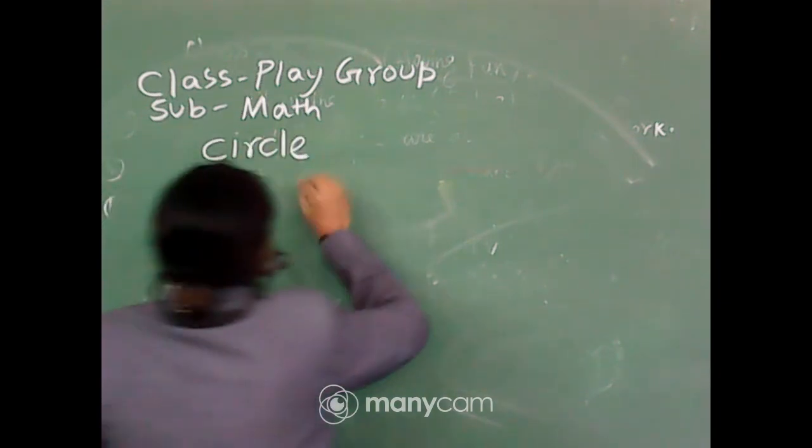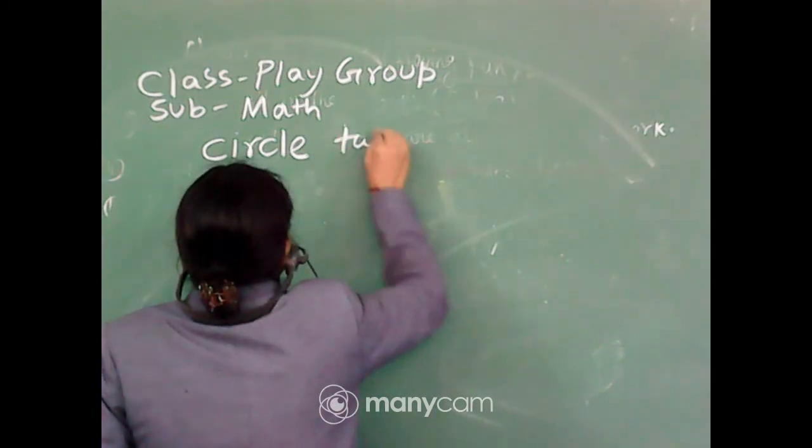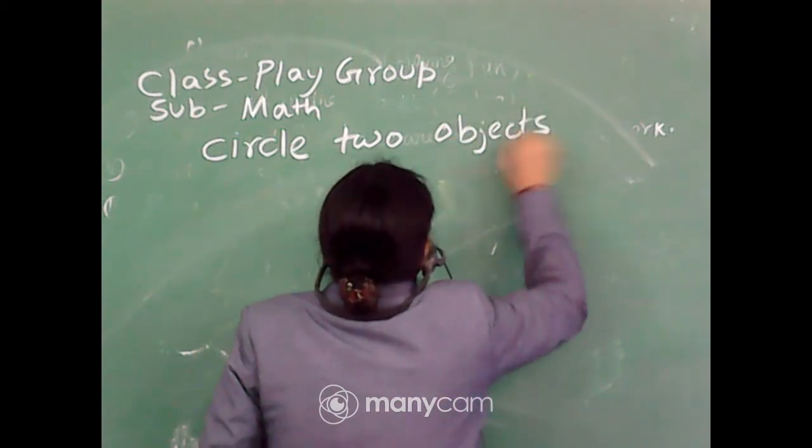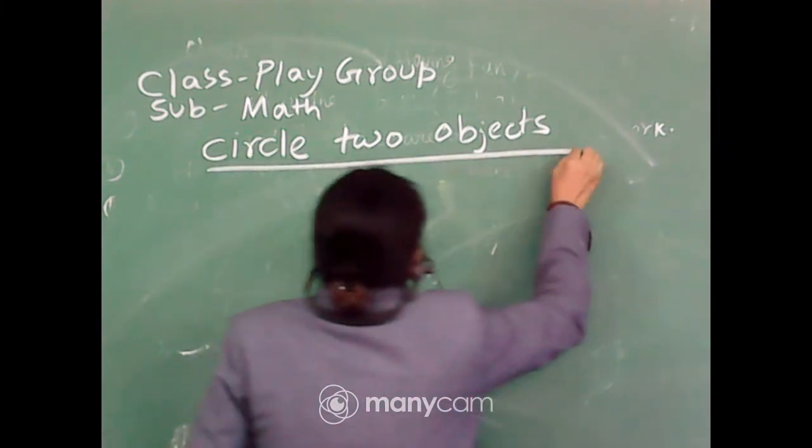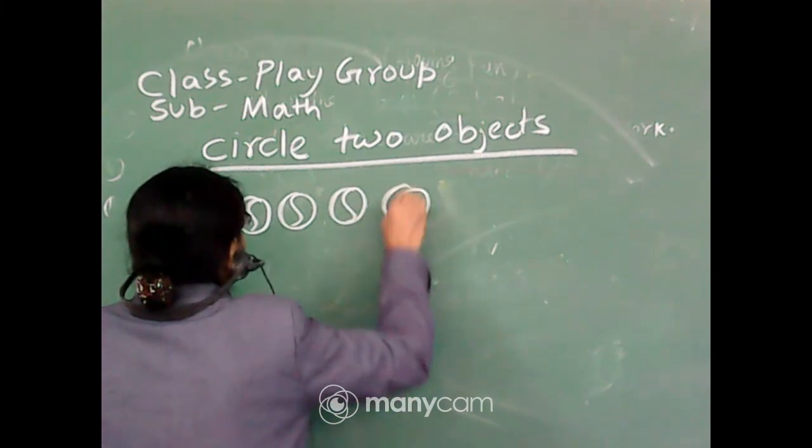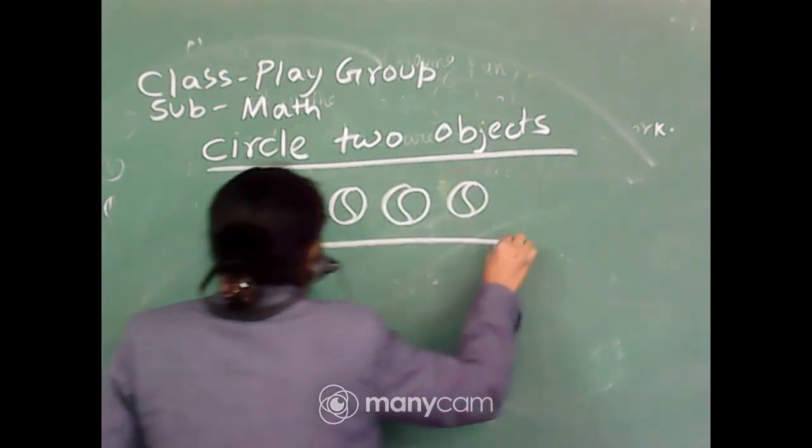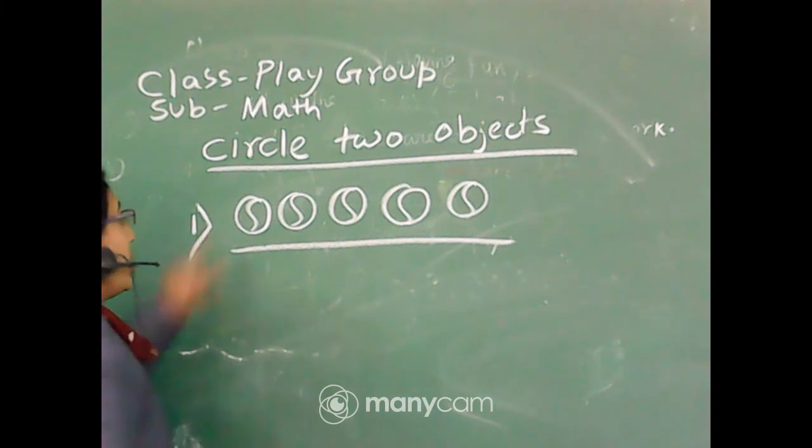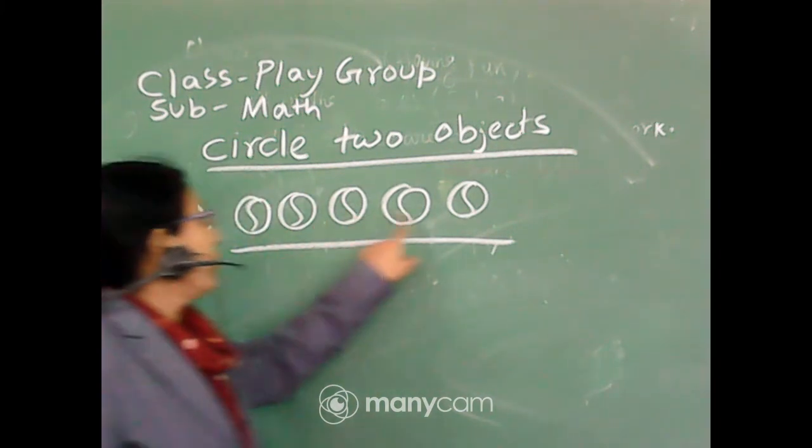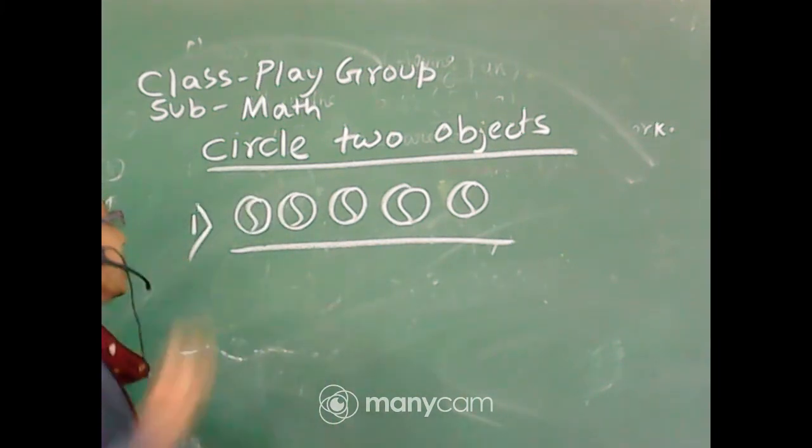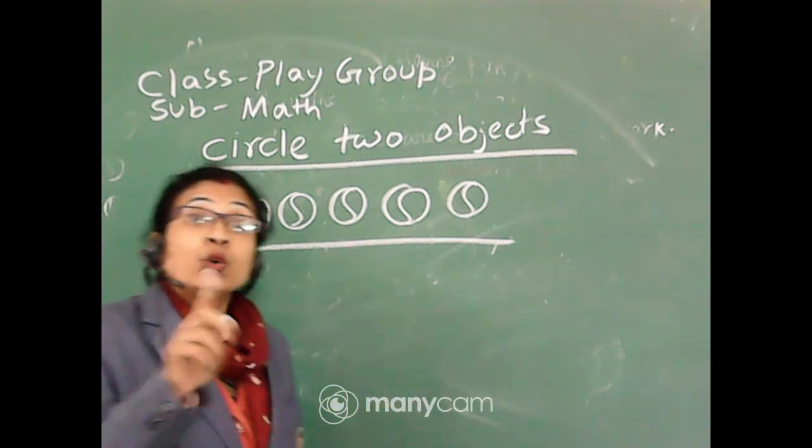Circle two objects. Now look. How many balls are there? Number one: how many balls are there? Can you see? Count: one, two, three, four, five. Five balls are there. But student, what is the heading? Circle two objects. So we just circle two objects: one, two.